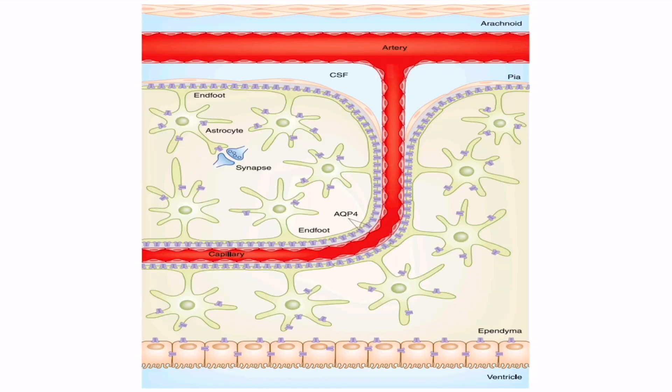The most important organ affected by changes in water level is the brain. The brain is protected by the blood-brain barrier, which prevents most blood-level problems from being transmitted into the brain. However, if there is a gross change in osmolarity of the fluids, the osmolarity inside the brain will change as well, as we can see with the blood-brain barrier here.